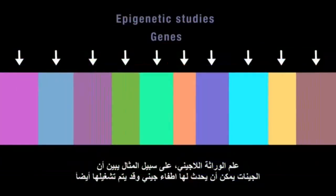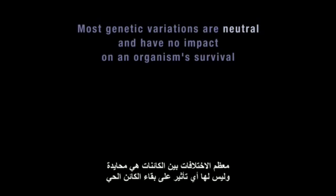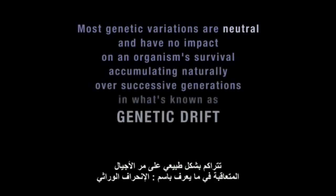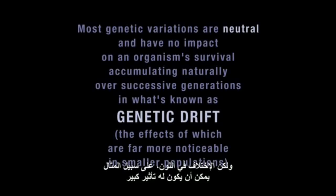Epigenetic studies, for example, show that genes can be switched on or off, and that this genetic activation or inhibition can be inherited and expressed in later generations. Most variations are neutral and have no impact on an organism's survival, accumulating naturally over successive generations in what's known as genetic drift, the effects of which are far more noticeable in smaller populations. But a variation in colour, for example, could have a major impact.